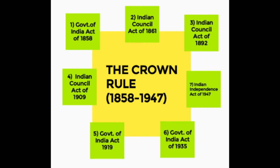The Crown Rule from 1858 to 1947 is divided into seven parts: the Government of India Act 1858, the Indian Councils Act of 1861, the Indian Councils Act of 1892, and the Indian Councils Act of 1909.